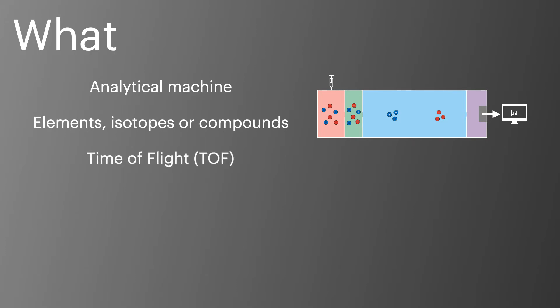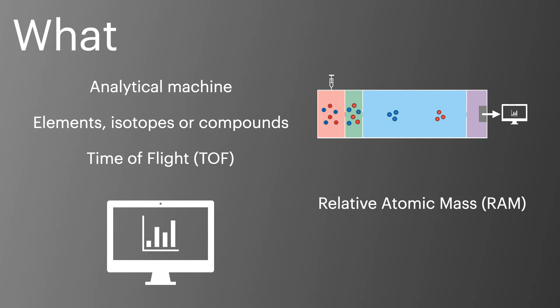In the AQA A-Level Specification, we focus on a type of mass spectrometer called time of flight. A mass spectrometer machine will measure the relative atomic masses or the relative molecular masses, and it will also measure the abundance of different isotopes present in a sample. This is what we focus on most during this course.